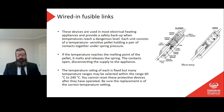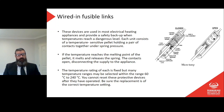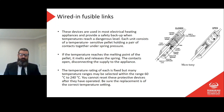Wired fusible links are used in most electrical heating appliances and provide a safety backup when temperatures reach a dangerous level. Each unit consists of a temperature-sensitive pellet holding a pair of contacts together under spring pressure. If the temperature reaches the melting point of the pellet, it melts and releases the spring, opening the contacts and disconnecting the supply to the appliance. The temperature rating of each is fixed, but many temperature ranges may be selected within the range of 60 to 240 degrees Celsius.